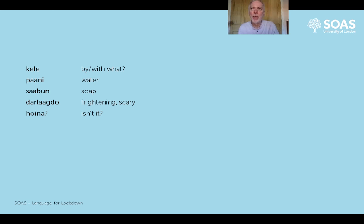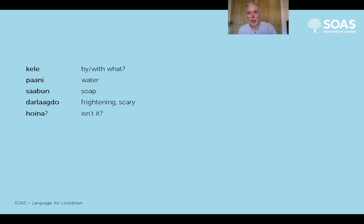'Hoina' is the negative form of the verb 'ho', defining something - 'to be something'. But used as a question, 'hoina?' means 'isn't it?' This is often the way questions are asked in Nepali: make a statement, and then at the end say 'hoina?' - 'isn't that so?', 'isn't that right?' 'Jinta' means 'concern' or 'worry'.